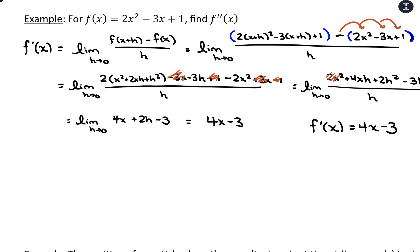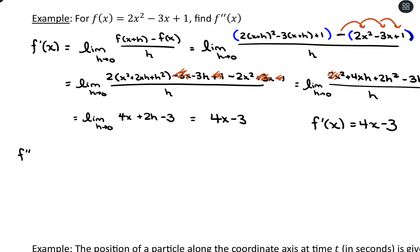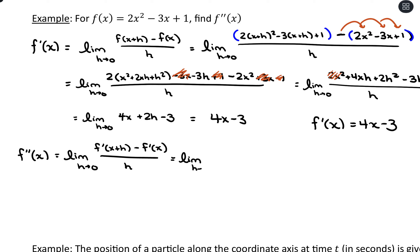If we want to find our second derivative, we're going to take the limit as h approaches 0, but now we use f prime of (x+h) minus f prime of x all over h. We're focusing on using our first derivative function here, so we'll have 4 times (x+h) minus 3, then subtract our derivative function 4x minus 3, all over h.